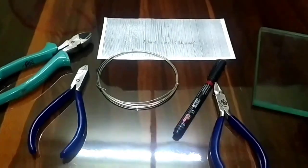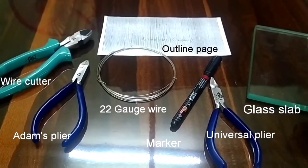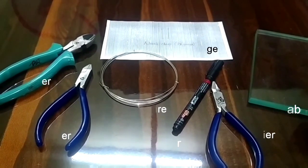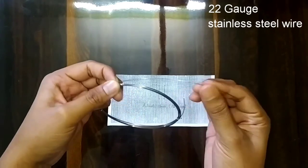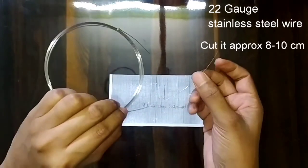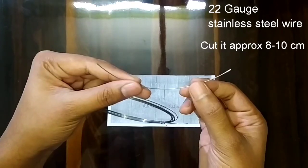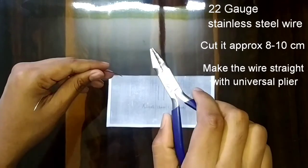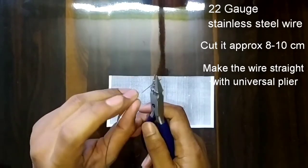These are the instruments required. First of all, we will take the 22 gauge stainless steel wire and with the help of the cutter, we will cut approximately 8 to 10 centimeter wire. With the help of the universal plier, we will straighten the wire.